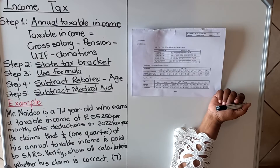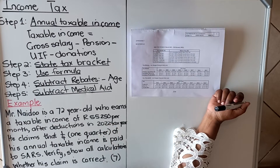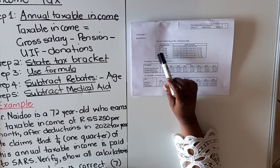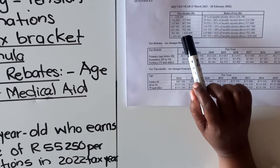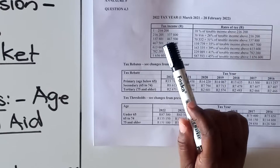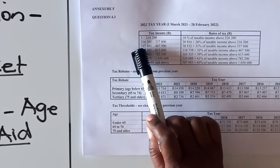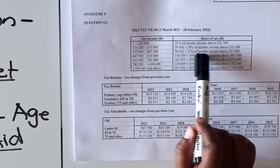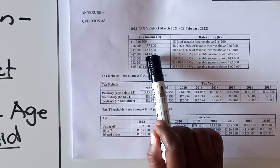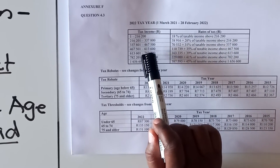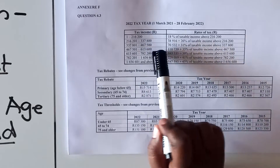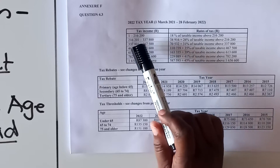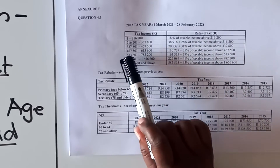Step two: state the tax bracket. In your question paper, in the annexure, they'll give you a table. In this table they call it a tax bracket because it's a range of amounts — from a particular number to a particular number — and on the side they give you a formula for that bracket. For step three, you use that formula depending on which tax bracket the taxable income belongs to.